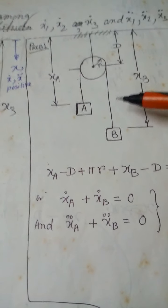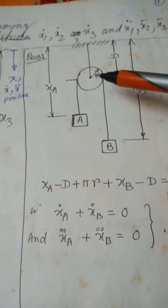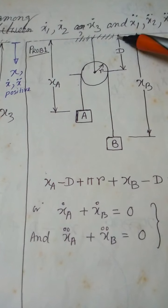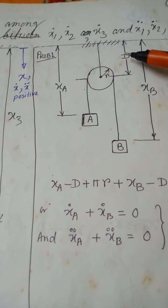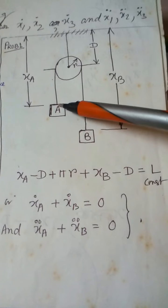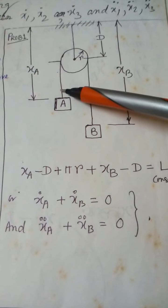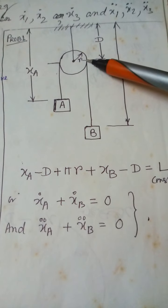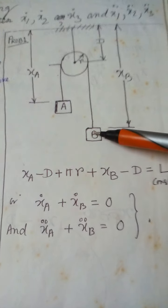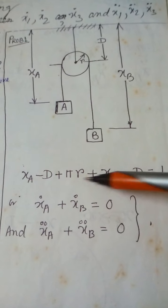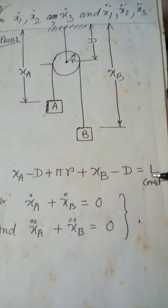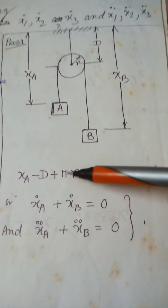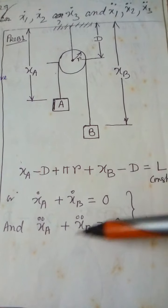That is the starting point of the solution. From a fixed reference point to the pulley center is d, which is constant. We define xa and xb as the positions of the two masses. These are variable, while d is constant. The total string length is xa minus d, plus pi*r, plus xb minus d, all equal to a constant.